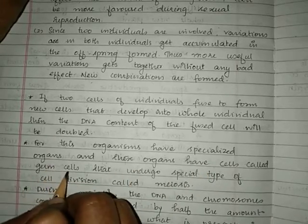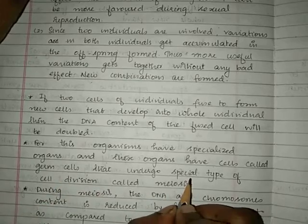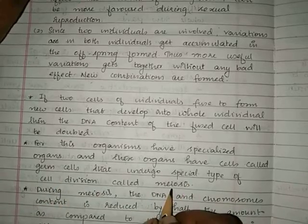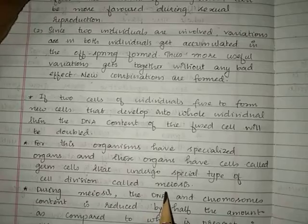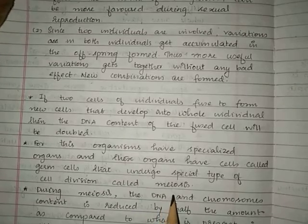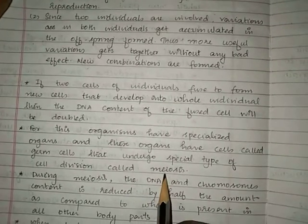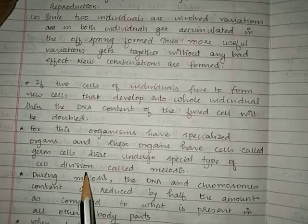In the germ cells, they are going to undergo a special type of cell division called meiosis. Meiosis is a type of cell division where one cell divides into two cells.